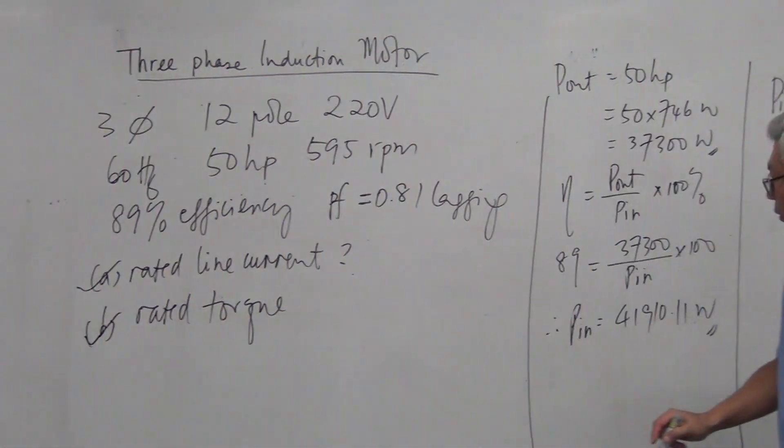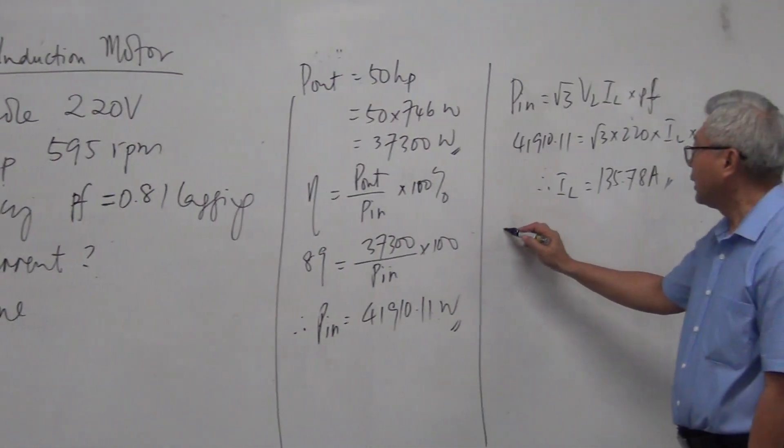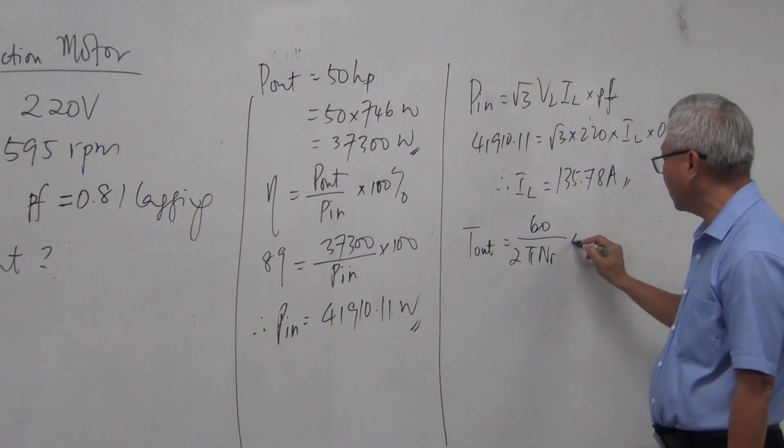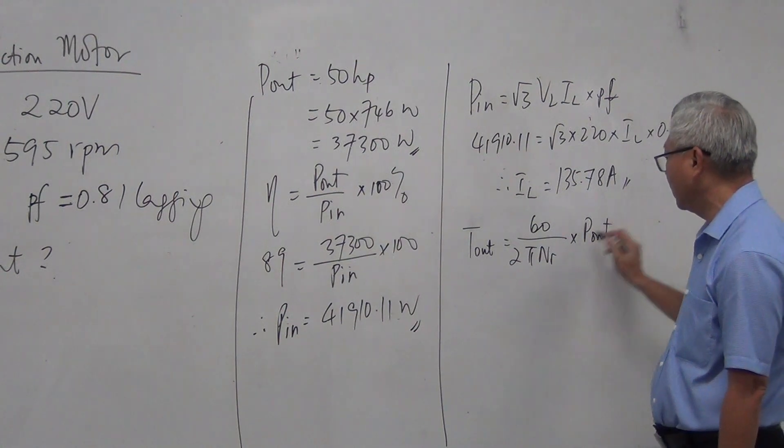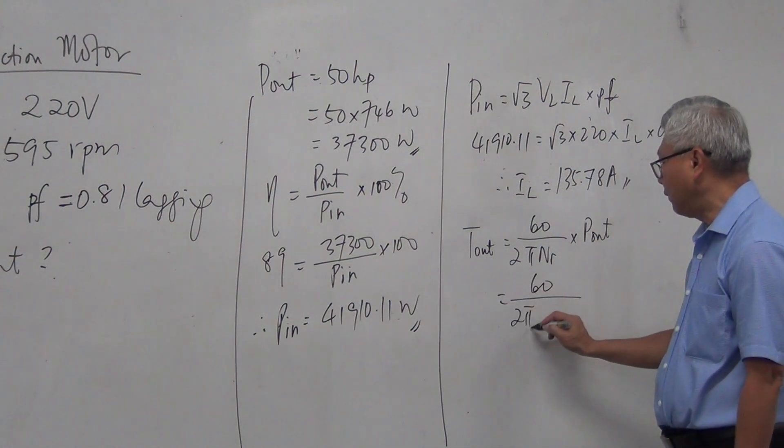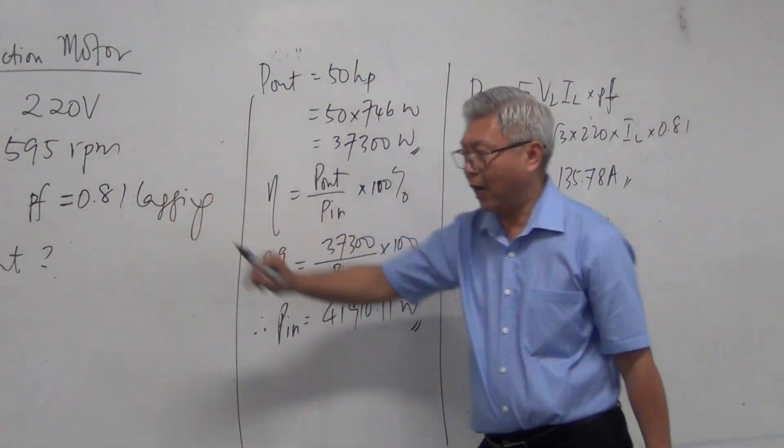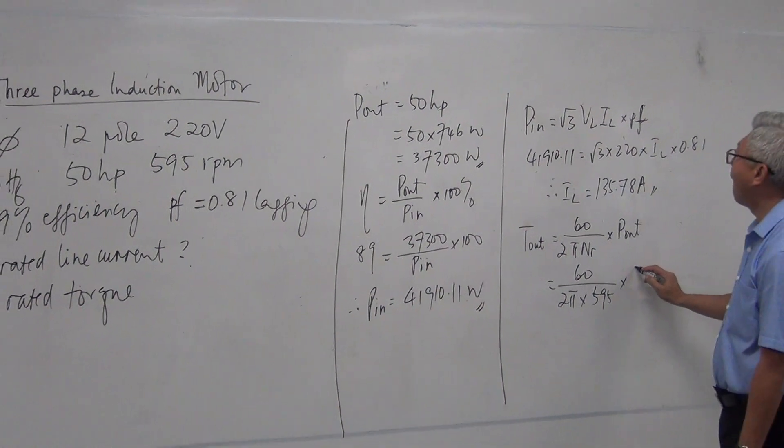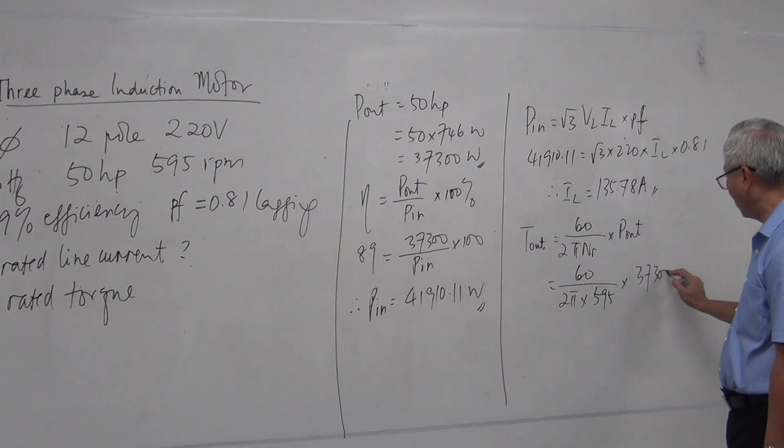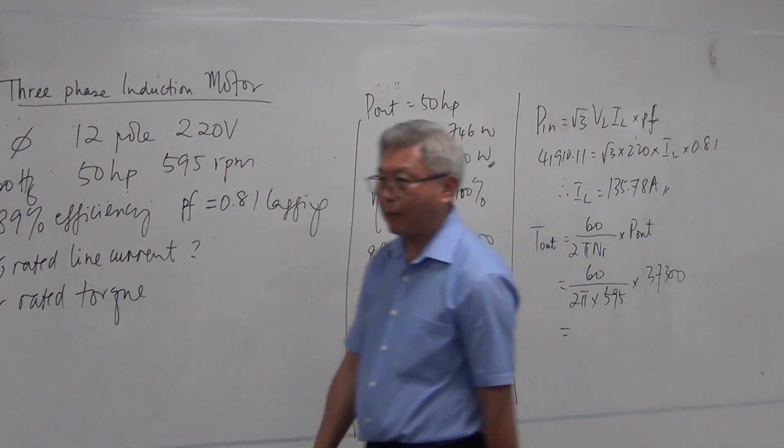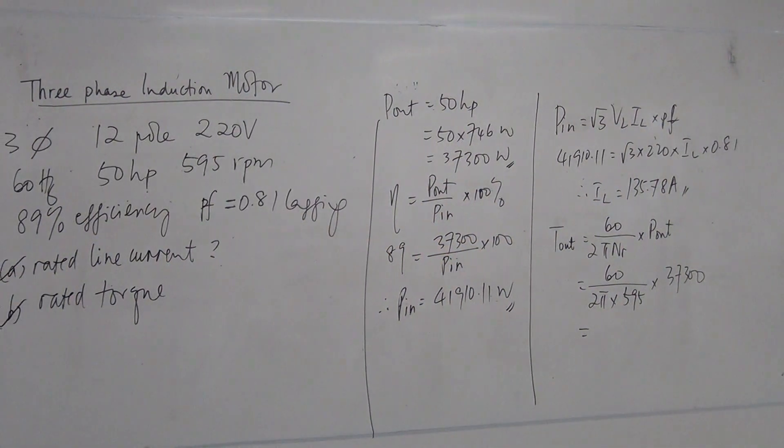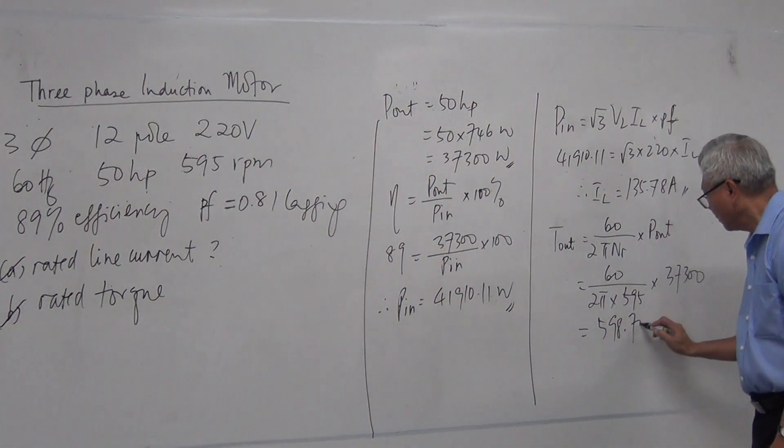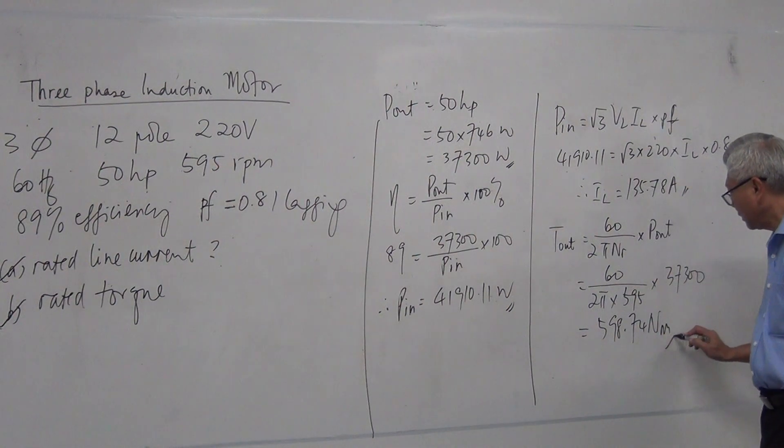Now, part B is to find the torque. To find the torque, the output torque, I use the formula 60 over 2 pi n multiplied by output power. And the speed is given. The nameplate is given. It's 595 RPM. And the output power is equal to 37,300 Watt. So with that, the output torque can be calculated. And that value is 598.64 Newton meters.